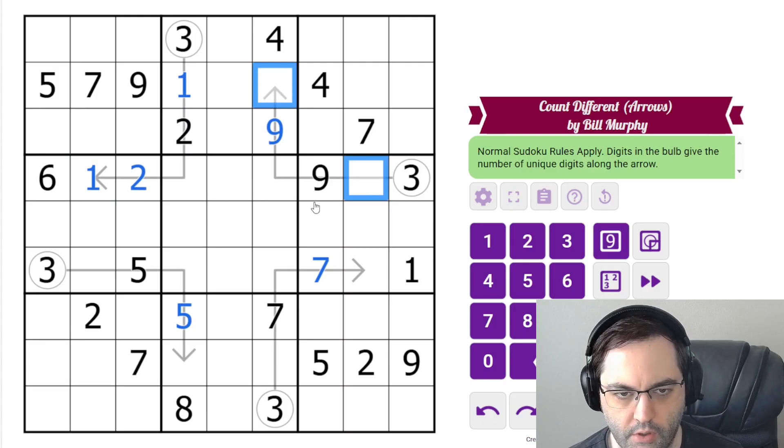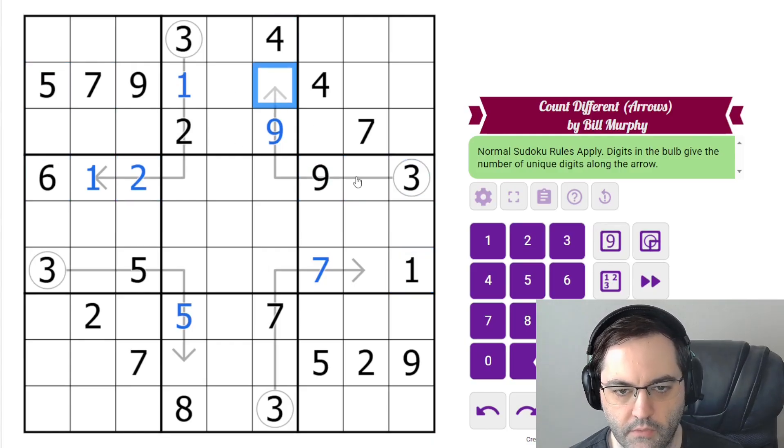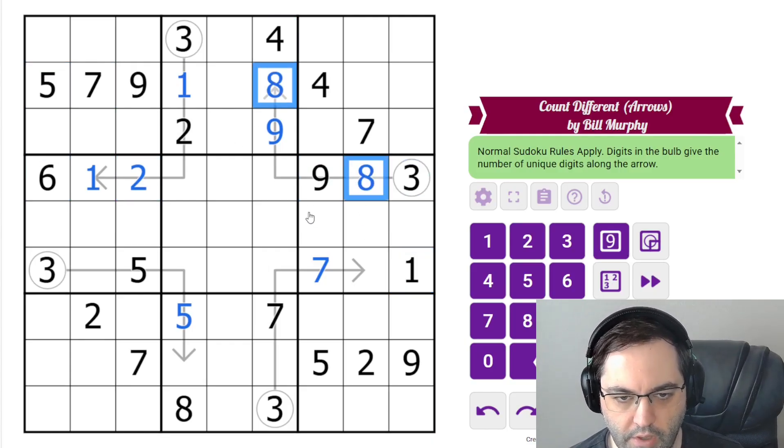And I think we're going to be able to do that with all of them. These can't be one, two, three, four, five. Could be six. Can't be seven, or nine, or six. There we go. So those are eight.